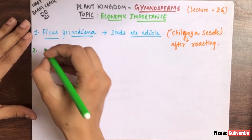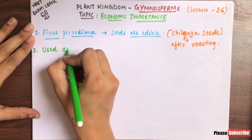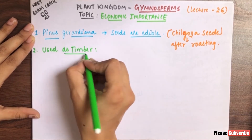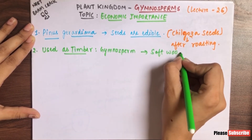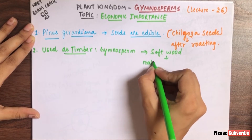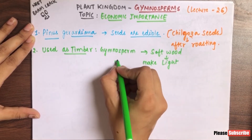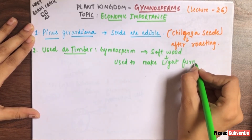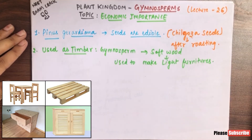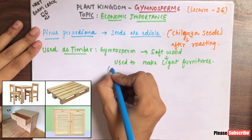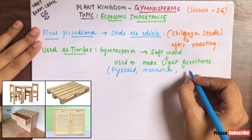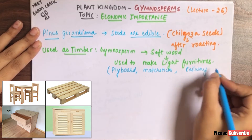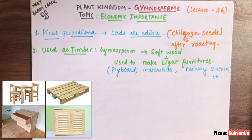The second point is that gymnosperms are used as timber. Gymnosperm wood is called softwood — it is softwood — and it is used to make light furniture. That is why gymnosperms are used as timber.